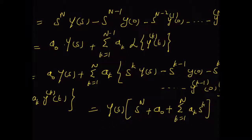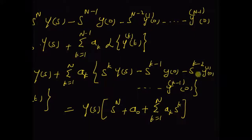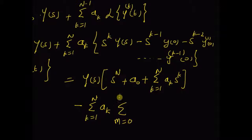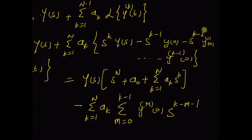Then the rest of the terms consisting of y(0), y'(0), and so on up to y^(k-1)(0), with the weighted sum k equal to 1 to n, a_k multiplied by these products. We can rewrite that sum as minus summation k equal to 1 to n, a_k multiplied by the sum m equal to 0 to k minus 1, where for m equal to 0 we have y(0), for m equal to 1 we have the initial value of the first derivative, times s^(k minus m minus 1) — which is s^(k-1) for m=0, s^(k-2) for m=1, and 1 for m equal to k minus 1.